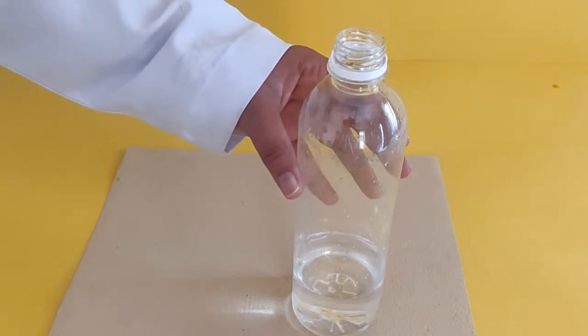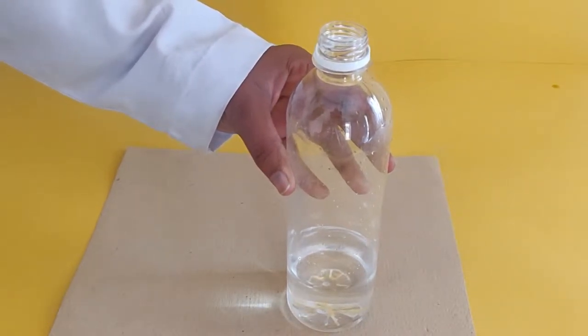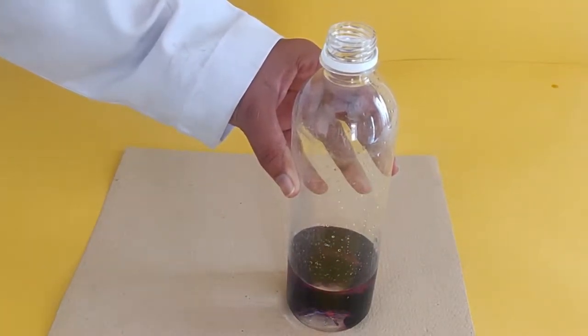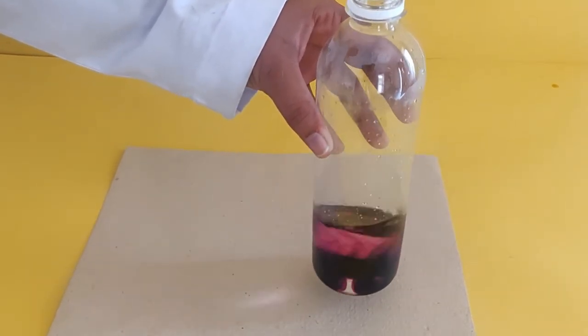Add potassium permanganate or any coloring agent to the bottle and fill it about one third full with room temperature water and mix it well.